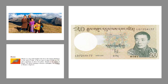Our next neighbor is Bhutan. Bhutan is a very small kingdom that lies in the eastern Himalayas, to the north of India. It has an area of 47,000 square kilometers and a population of 2.2 million. Thimphu is the capital of Bhutan. The official language is Dzongkha, and the currency is the Ngultrum.